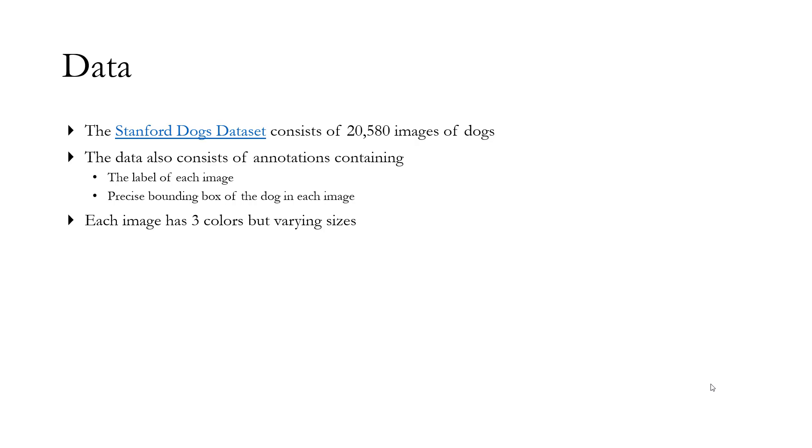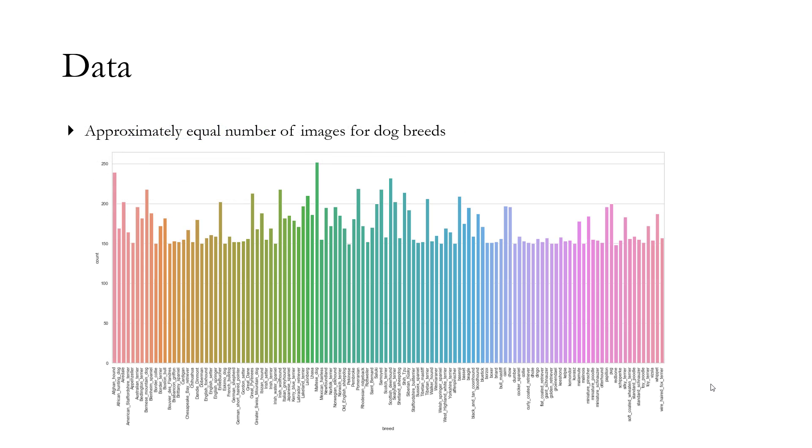Each image has three colors but varying sizes. None of the images are grayscale but they have different sizes, so I did rescale the images. Thankfully there were approximately equal numbers of images for various dog breeds - there was no severe class imbalance.